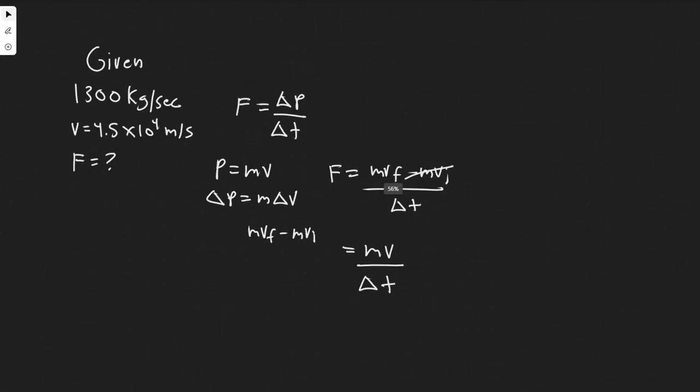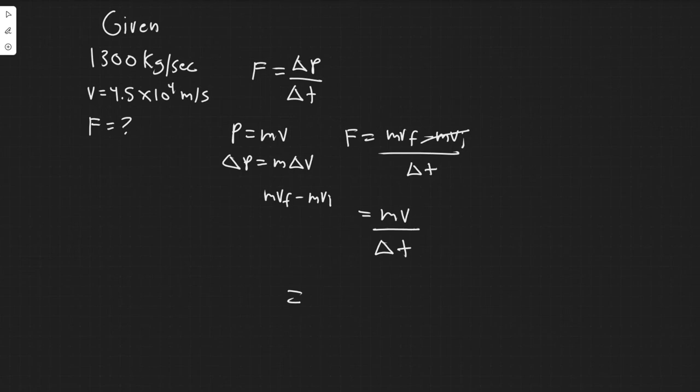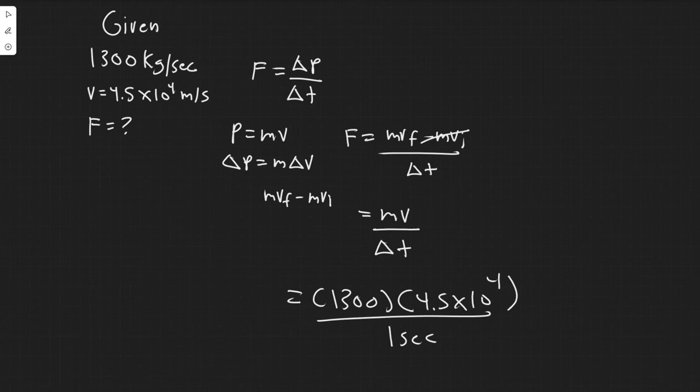And then it's really just a matter of plugging it in. So the mass we know is 1,300 kg. Multiplying by the velocity they give us is 4.5 times 10 to the 4, dividing by the change in time, which is one second. So really just dividing by one.